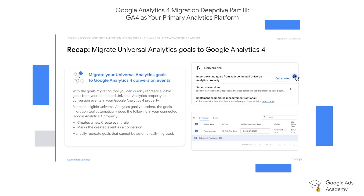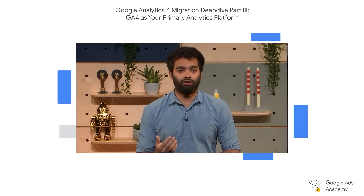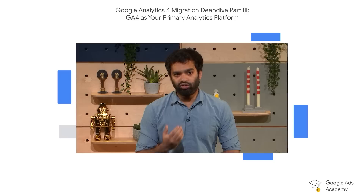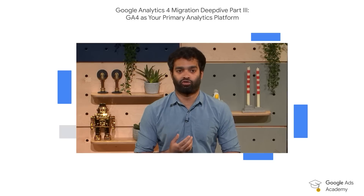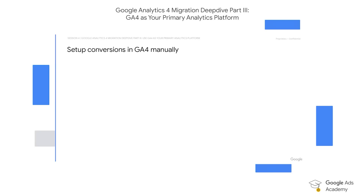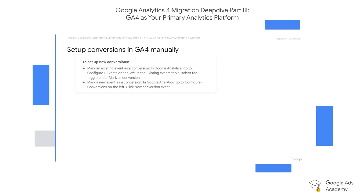When it comes to the options for doing so, some of you might have access to the external goals migration tool, which will allow you to very quickly and easily replicate and recreate the goals that you had set up in Universal Analytics with new corresponding conversion actions in GA4. However, in addition to making use of the goals migration tool, it's also possible to set up conversion actions in GA4 manually, which we can do by configuring an event and then marking that particular event as the conversion.